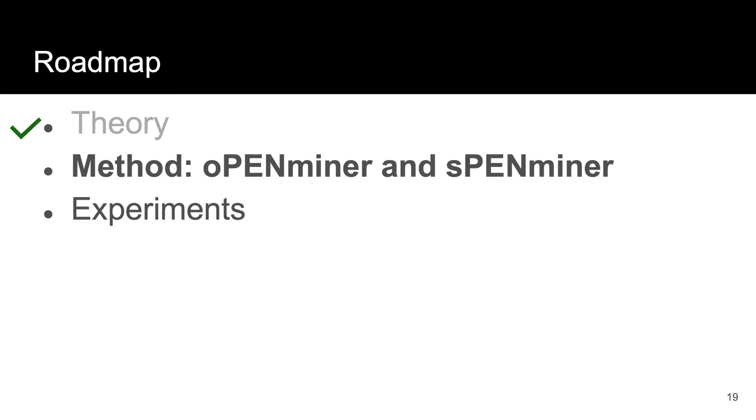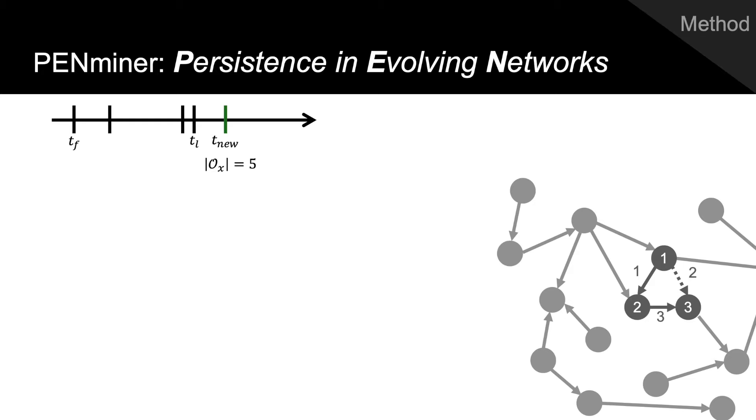We next discuss our method PenMiner, which has an offline variant, OPenMiner, for measuring the persistence of activity snippets in time-stamped sequences of edges from the past, and a streaming variant for maintaining the persistence of activity in edge streams. In this presentation, we focus on SPenMiner.